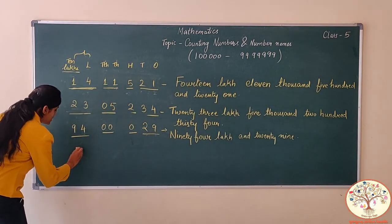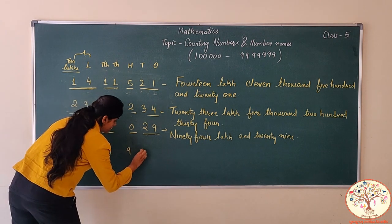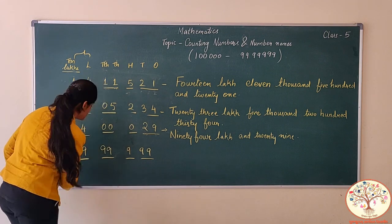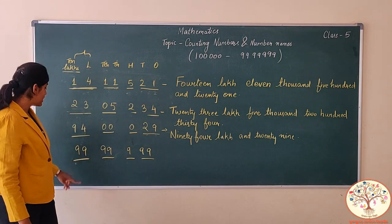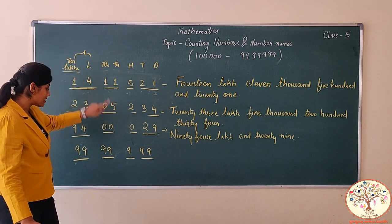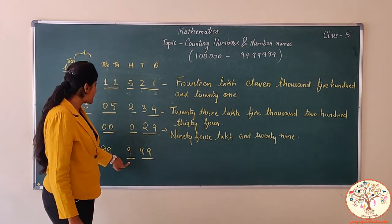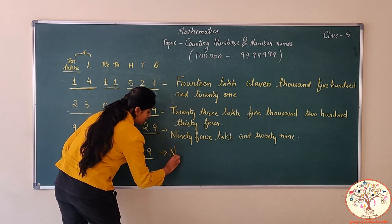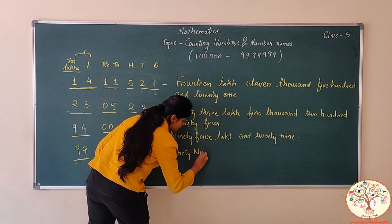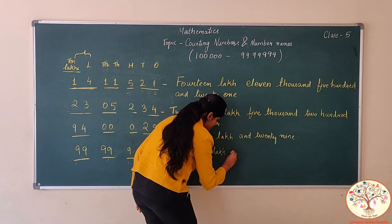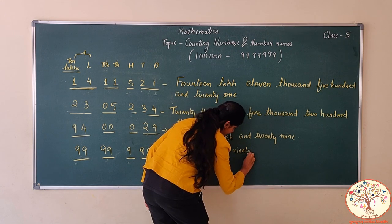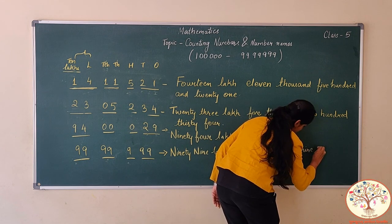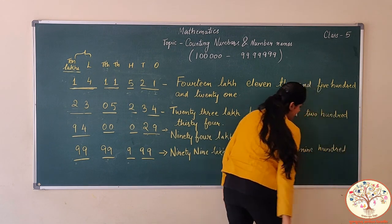Now let's take the largest 7-digit number. Again divide it into 4 parts: tens and ones together, 100, 1000 and lakhs. What is given? 99 in the lakhs place. So we write 99 lakhs. Then 9 hundred, and 99. So the number name is 99 lakhs, 99 thousand, 9 hundred and 99.